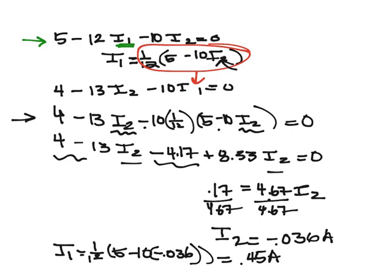So for I3, we get negative 0.036 plus 0.45. And we get I3 is equal to 0.414 amps.